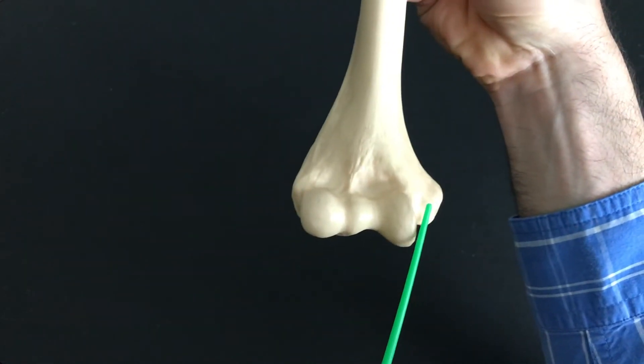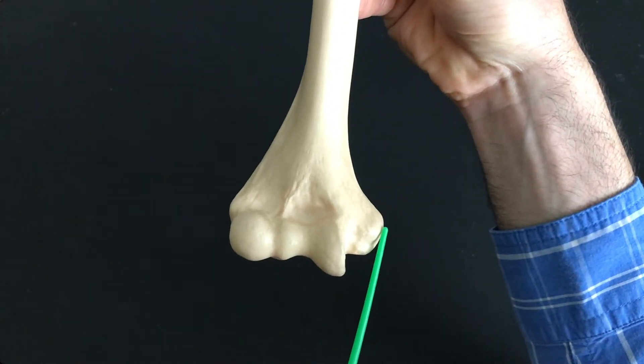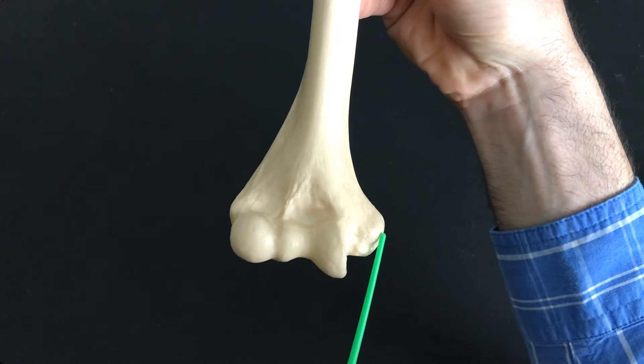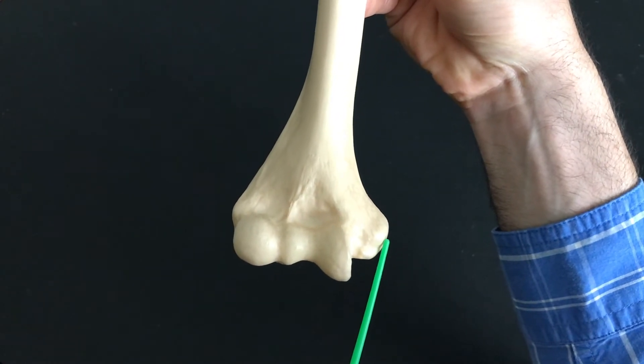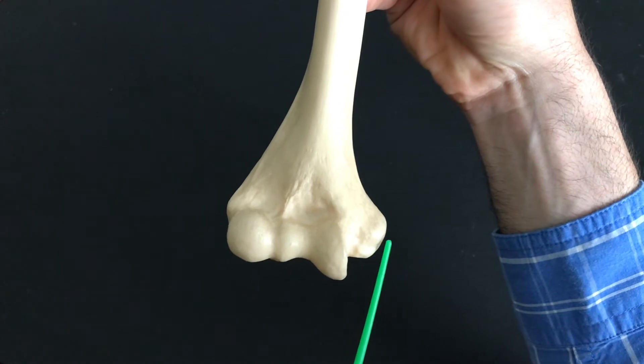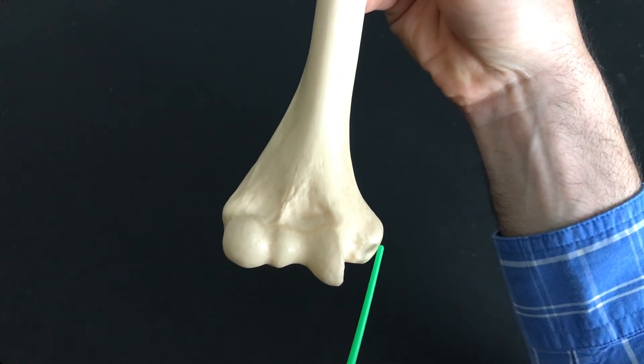This here is the medial epicondyle. Some people call this one the funny bone. If you extend your arm out straight in front of you and you palpate the medial side of your elbow, you'll feel that one stick out pretty well.